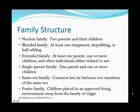So what kind of families do we see? There is the traditional nuclear family where you have two parents and their children. We see a lot of blended families where you have at least one step-parent with step-siblings or half-siblings. Extended families are also common where you have at least one parent, their children, and other individuals who live in the household — often relatives, but they don't have to be. There are also single-parent families, where we have one parent and their children.